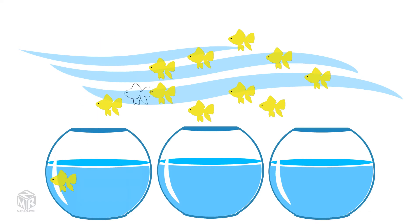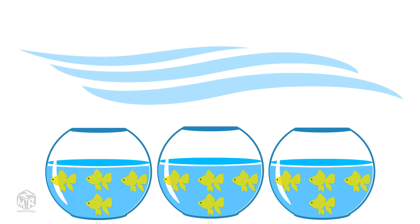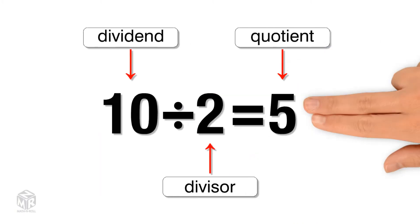Division is breaking up a number into equal parts or groups. The dividend is the number that is to be divided in the division problem. The divisor is the number that you are dividing by, and the quotient is the answer.